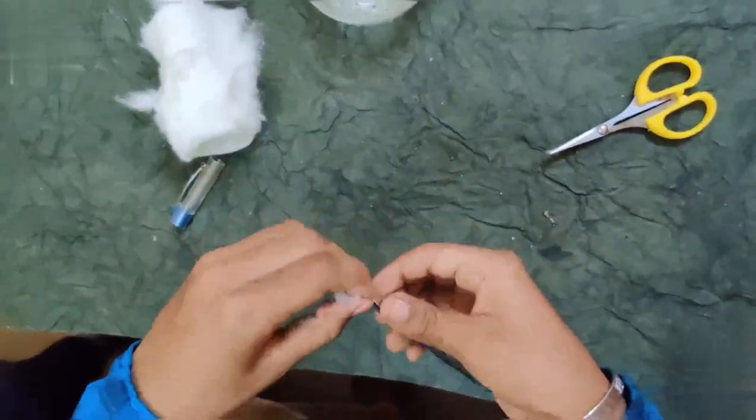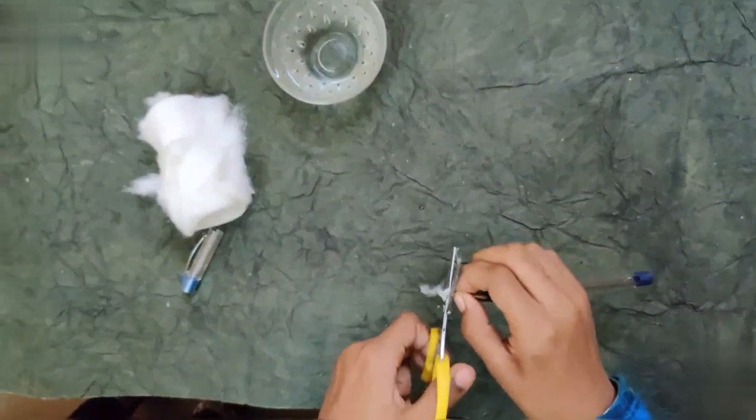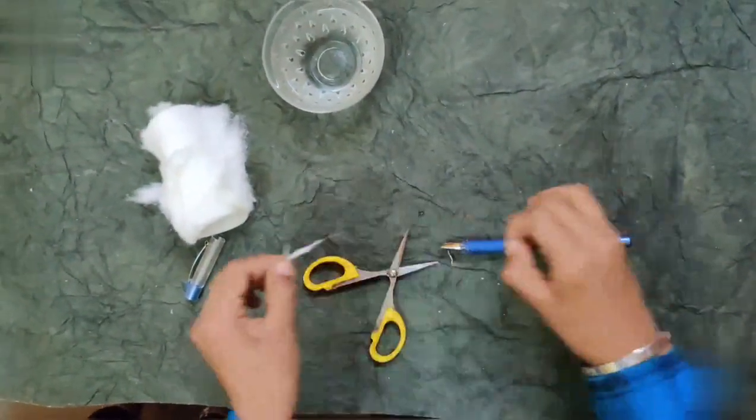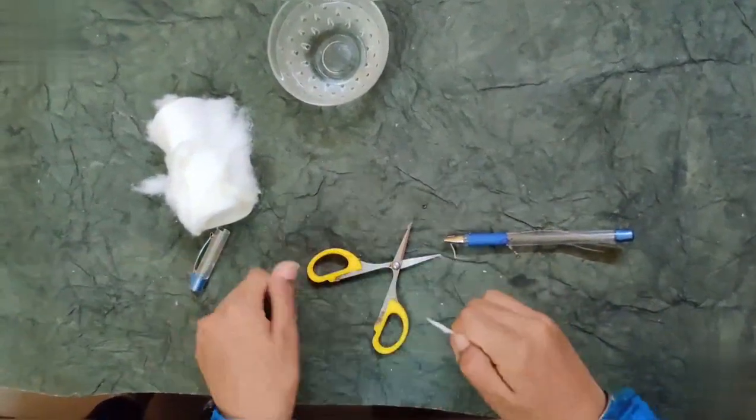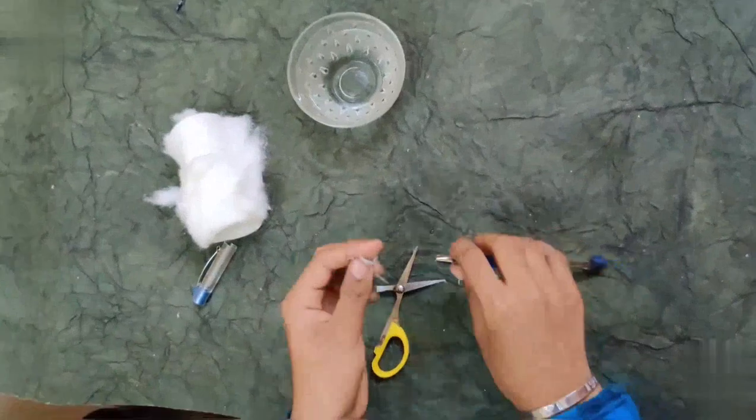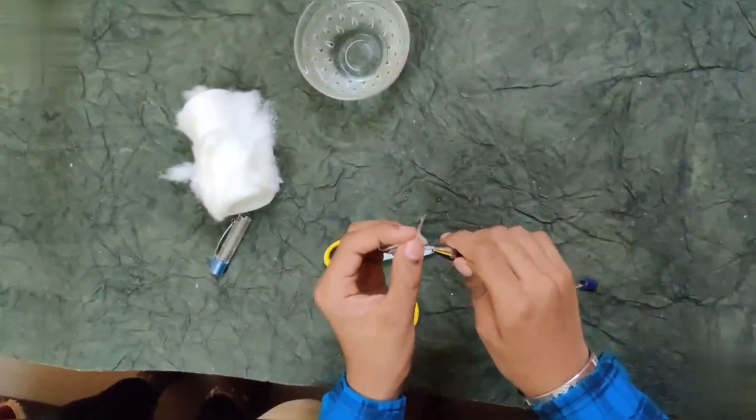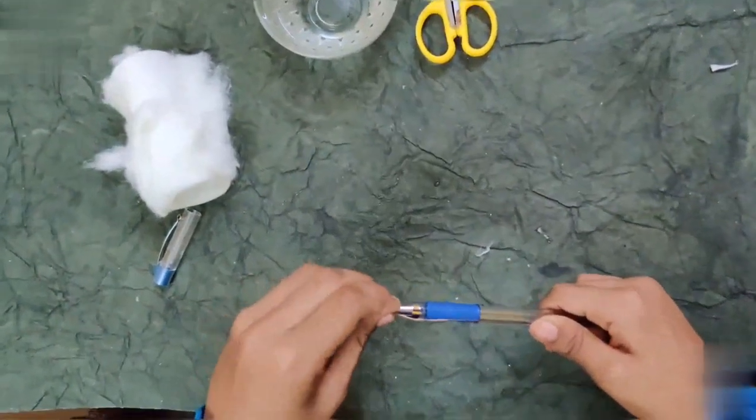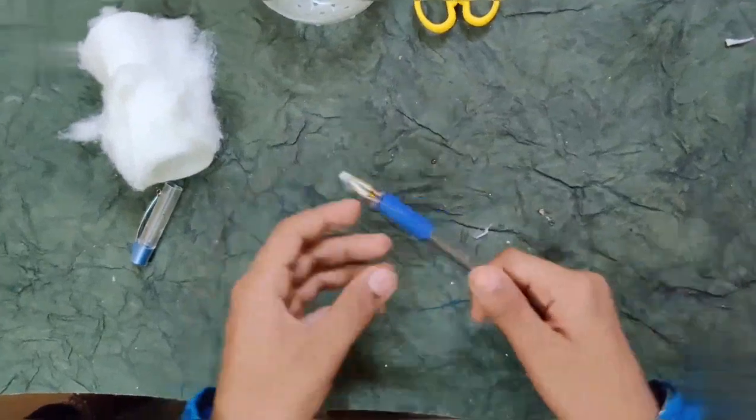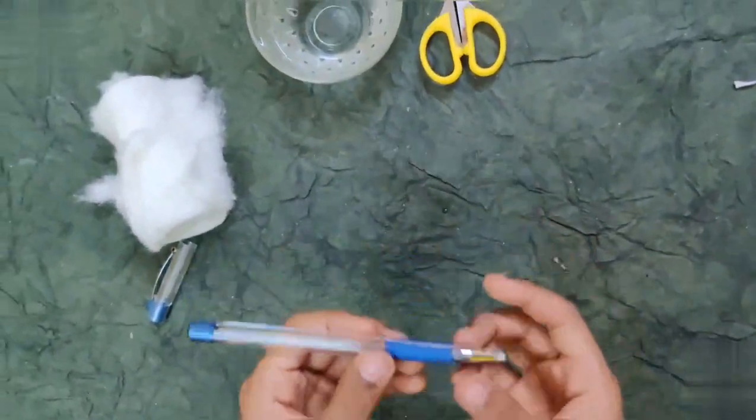Again, take the scissors and cut the top part. Or you can take it with your hands. Right. Then, we should shape it. See? Our pen is done. The stylus pen is done.